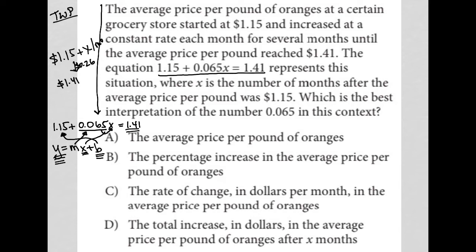So I'm relating this equation that was given to us to this linear Y equals MX plus B. How did I know to do that? Well, it's because the question says that it increased at a constant rate each month. Whenever I see constant rate on this test, I'm thinking linear. Whenever I think linear, I think Y equals MX plus B. So we're just being asked, well, what is this 0.065? What does this 0.065 mean? And we know that it's the slope.